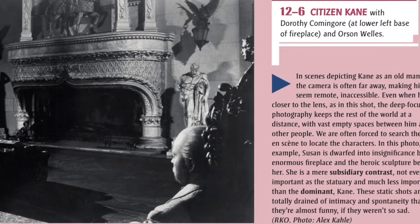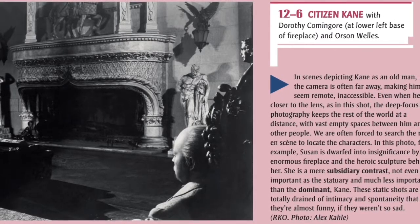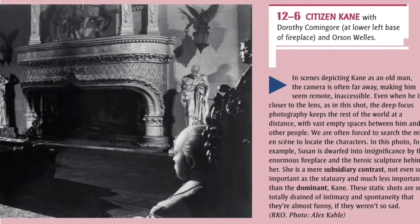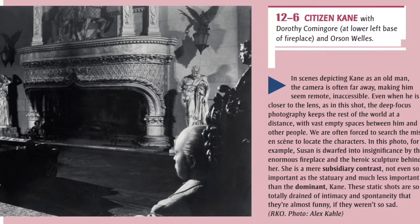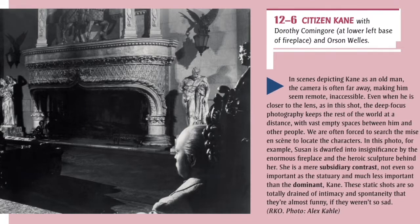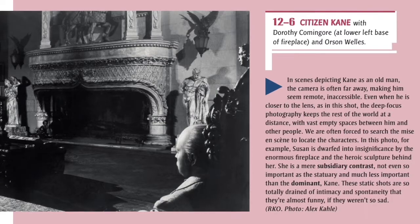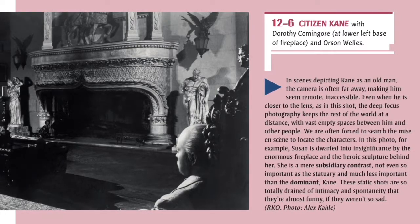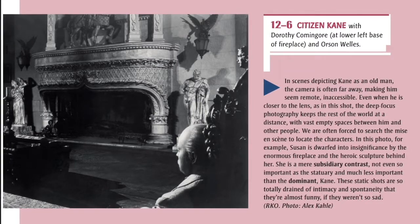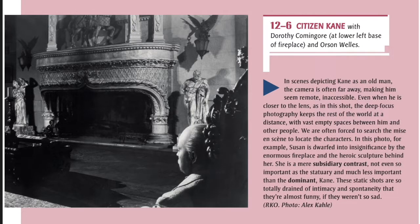In scenes depicting Kane as an old man, the camera is often far away, making him seem remote, inaccessible. Even when he is closer to the lens, the deep focus photography keeps the rest of the world at a distance, with vast empty spaces between him and other people. We are often forced to search the mise-en-scene to locate the characters. In this photo, Susan is dwarfed into insignificance by the enormous fireplace and the heroic sculpture behind her — a mere subsidiary contrast, not even as important as the statuary. These static shots are so totally drained of intimacy and spontaneity that they're almost funny, if they weren't so sad.